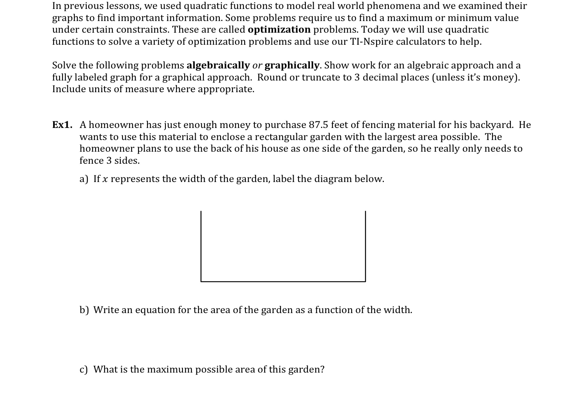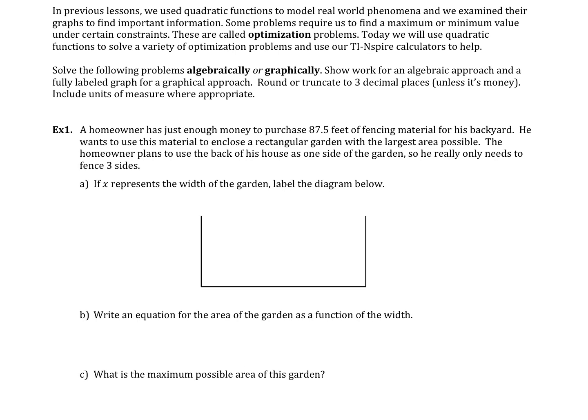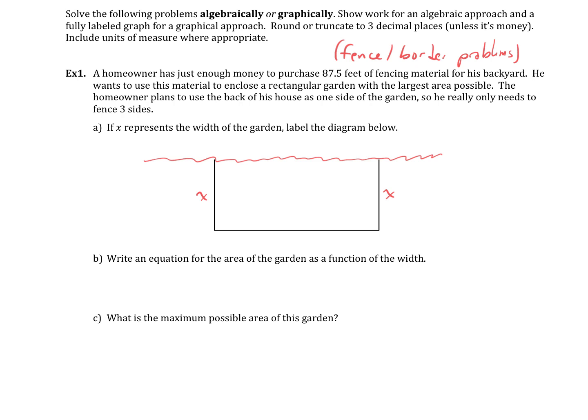A homeowner has just enough money to purchase 87.5 feet of fencing. This is a very typical kind of problem. There's a lot of optimization here going on. Some are about borders and some are about fences. If you wanted to look at Khan Academy or somewhere else for this, look up fence and border problems. Very typical of this kind of thing. We're maximizing area usually. The other kind of thing we'll maximize might be profit. The homeowner wants to use this material to enclose a rectangular garden, and plans to use the back of the house, so we don't have to actually put fence here. We're only going to put fence on these three sides. If x represents the width of the garden, let's use that for the smaller dimension. We'll say that represents width. We know that the total has to be 87.5. So this is going to be the rest, 87.5 minus 2x. This is a very typical way to do this.